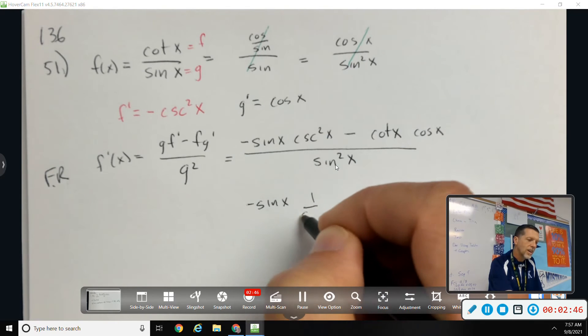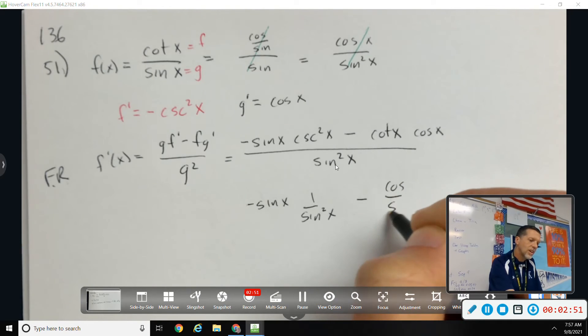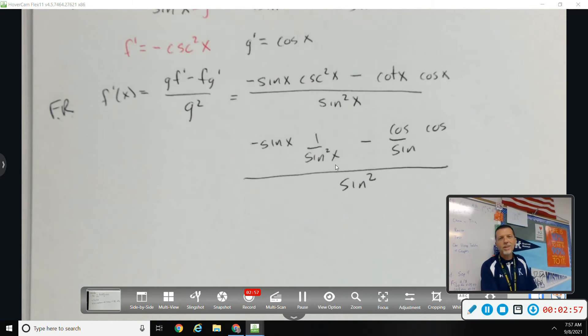And so, you know, there's probably five different ways you could do this. Cosecant is one over sine. Cotangent is cosine over sine. That's cosine all over sine squared. Like, I don't know what they're going to do next for this.